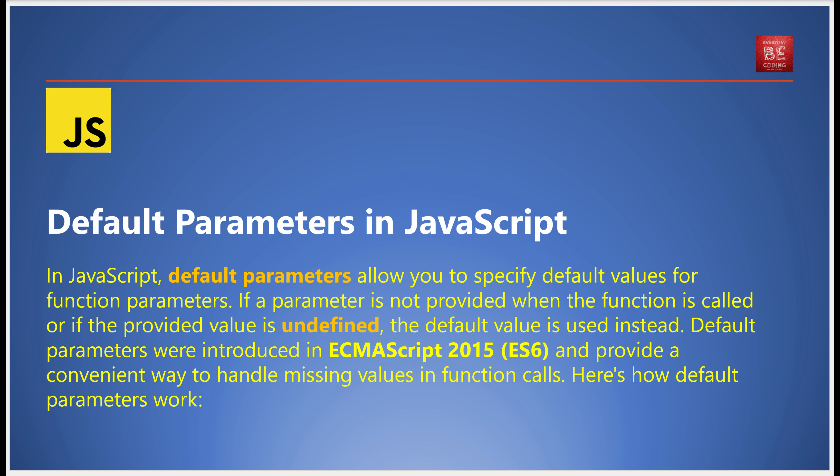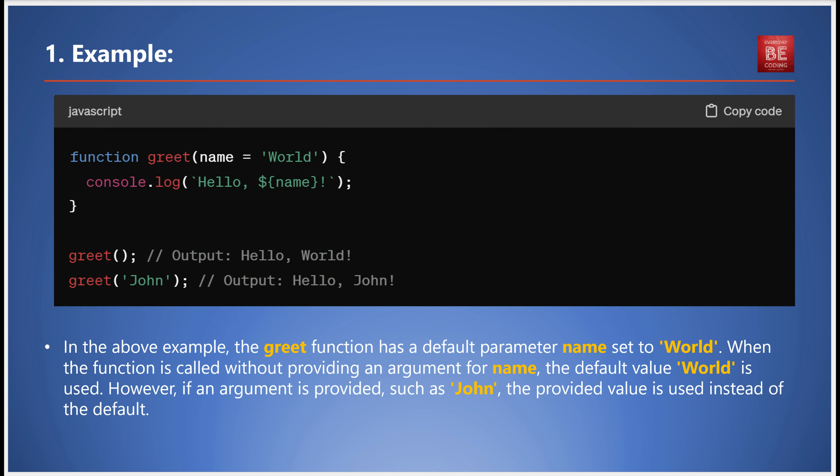To illustrate, consider this JavaScript function. In this example, the greet function has a default parameter name which is set to 'World'. When the function is called without providing an argument for name, the default value 'World' is used.